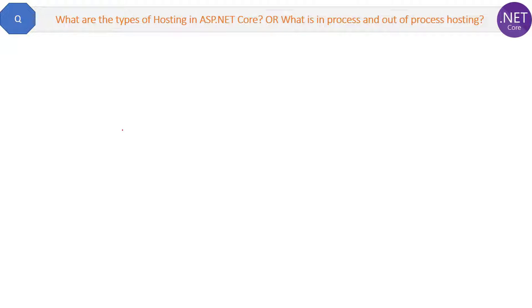What are the types of hosting in ASP.NET Core? In other words, what is in-process hosting and what is out-of-process hosting? Let's try to understand with the help of a diagram. We will not go into very much detail, but we should have a high-level understanding of in-process and out-of-process hosting.